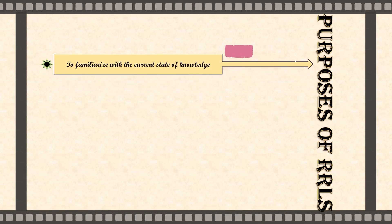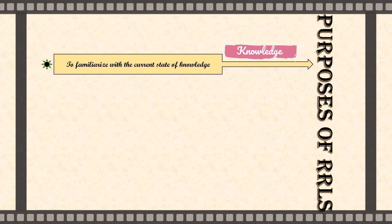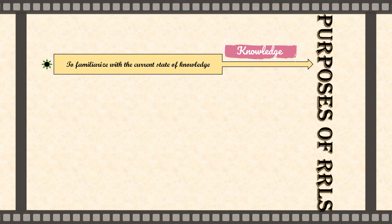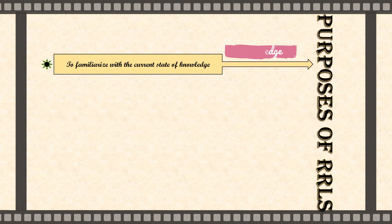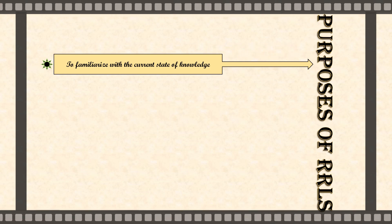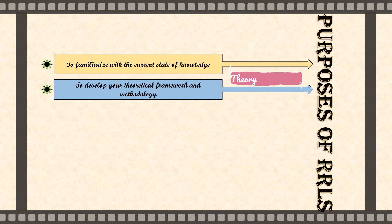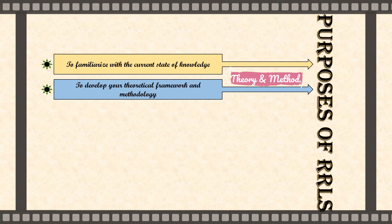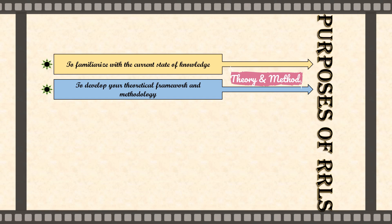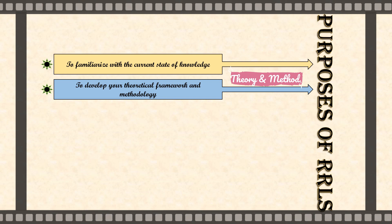It is very important that you are aware of the purpose in writing the RRLS. There are a bunch of purposes, but I chose to discuss the five most essential. The first one is to familiarize with the current state of knowledge. When we search and read publications, articles, and other researches previously held, we get to gain knowledge about the present research we are conducting. The second is to develop your theoretical framework and methodology. While reading on previous studies and discussions relevant to your research, you will be able to define and understand the key concepts of your own study.